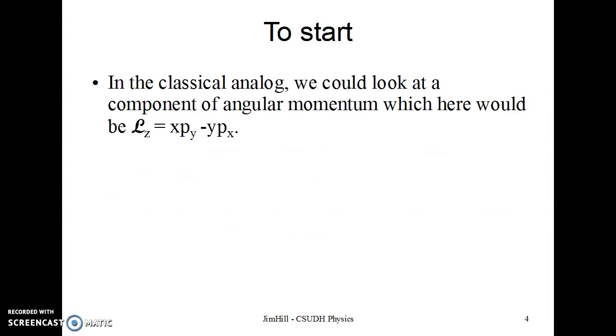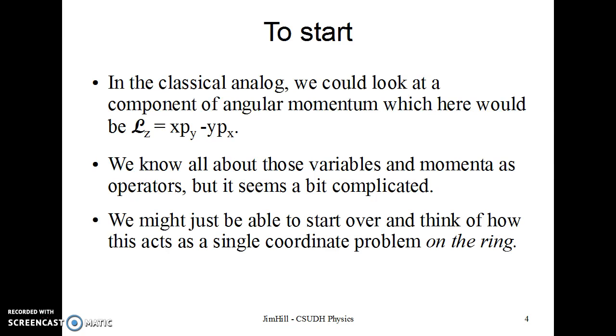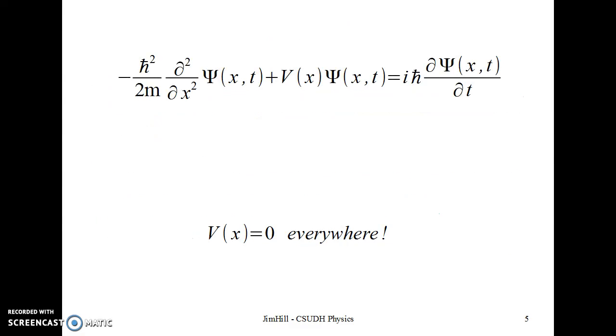So if we were doing what we do a lot of times, classical analog, we could say angular momentum, well, the z component classically is the z component of r cross p, so it's xpy minus ypx. That would be correct. And in fact, we know all about x, we know all about py and the other ones. But frankly, setting up some equation where I have both coordinates and derivatives in each coordinate and values of the other coordinates, it seems like it could get a little sticky.